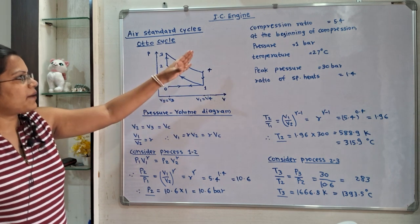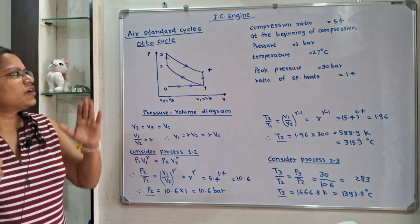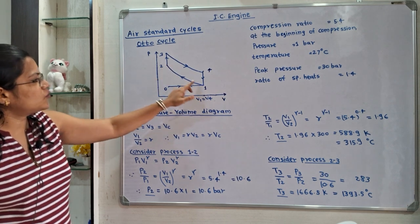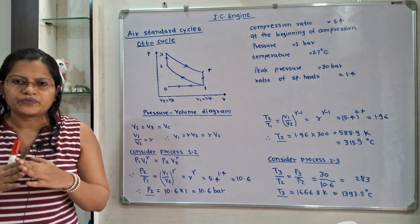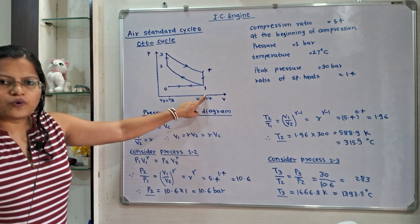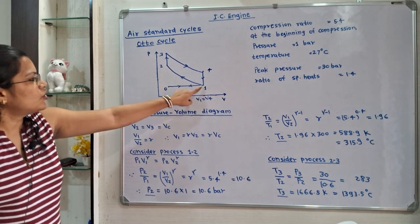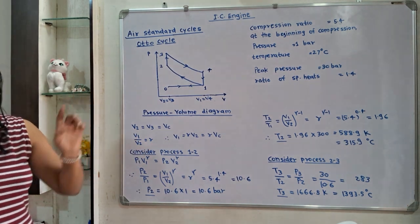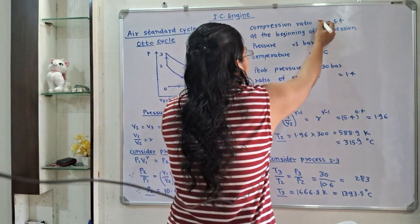Now, from the diagram we will identify the notations for the given data. The compression ratio is the ratio for process 1 to 2, the isentropic compression process. The compression ratio is V1 divided by V2, denoted as R. So V1 by V2 equals R, and the value of R is 5.4.